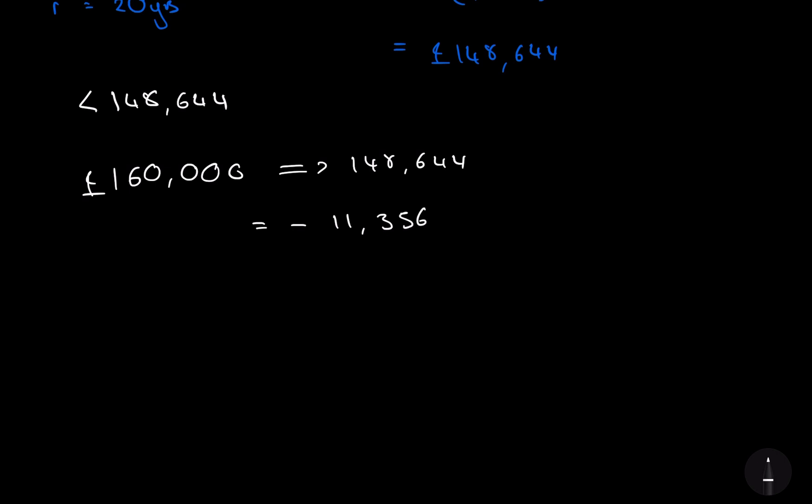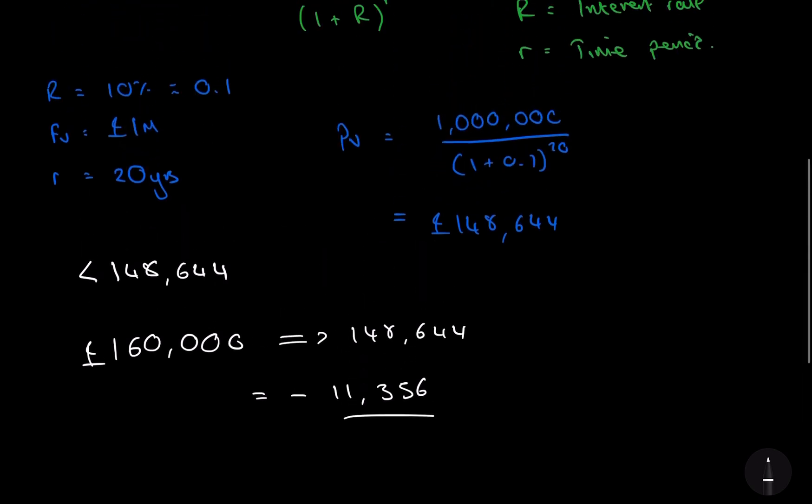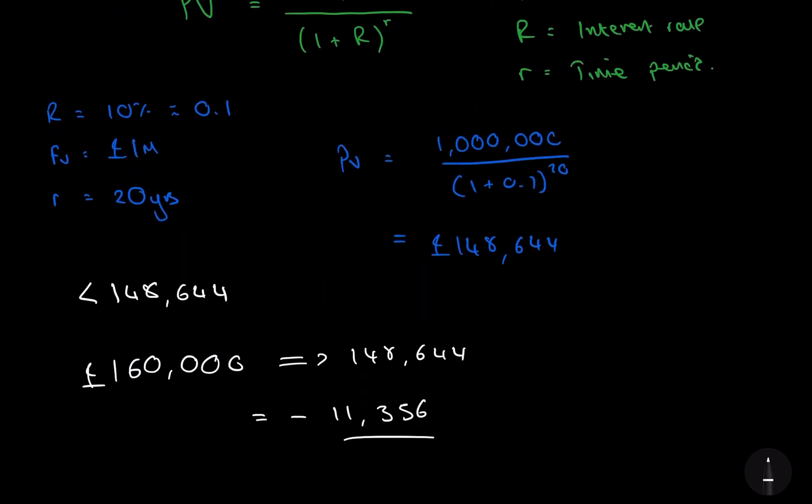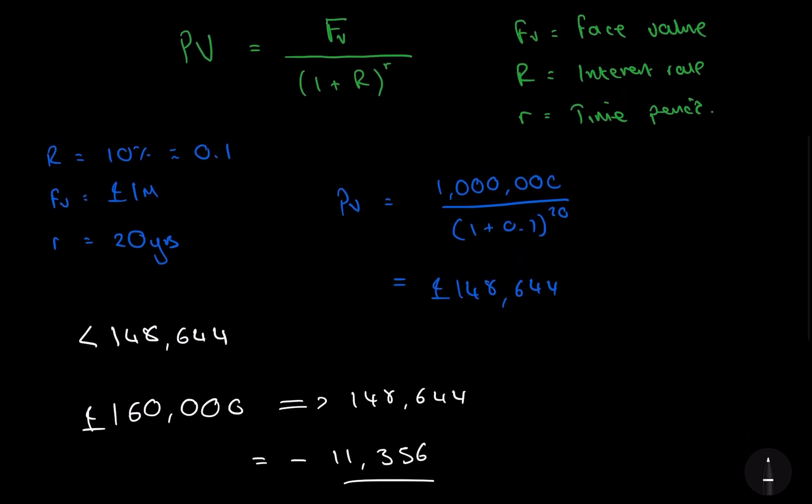So we're losing that much money, and that's why we need it less than £148,000. And that is essentially what a pure discount bond is. So thanks for watching, and make sure you watch my next videos on level coupon bonds and console bonds.